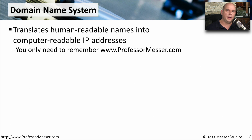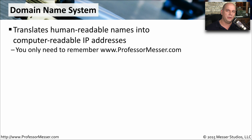An IP configuration option that is optional but almost always used is one for a domain name system IP address. This is used to convert the names you provide to your computer into an IP address so that that device can then be communicated with across the network. You only have to remember www.professormesser.com, but behind the scenes your computer goes to a DNS server, finds out what the IP address is of that particular device, and uses that to communicate back to the Professor Messer web server.